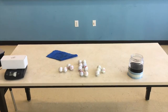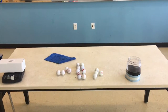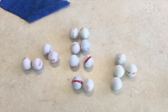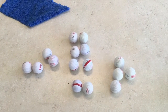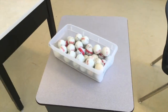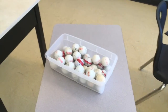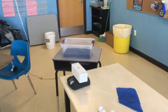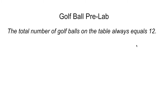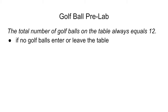That was not true for a moment because we let 4 leave the table. Let's try another round. So how many golf balls can you see on the table now? If we count all these up we'll see we have 16 golf balls on the table, and that breaks our rule that it should always be 12. But if you look over here, we've got a box full of golf balls. So if we allow golf balls to enter the table or leave the table, then we can't really hold this statement true. But we want that statement to be true, so we're going to say: the total number of golf balls on the table always equals 12 if no golf balls enter or leave the table.